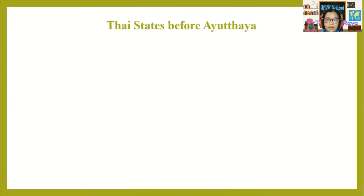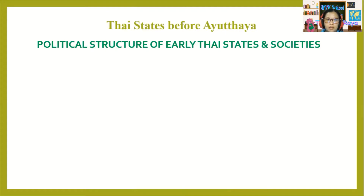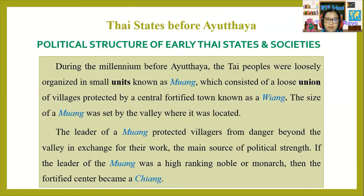Thai states before Ayutthaya — political structure of early Thai states and societies. During the millennium before Ayutthaya, the Thai peoples were loosely organized in small units or states known as Muang, which consisted of a loose union of villages protected by a central fortified town known as Riyang.